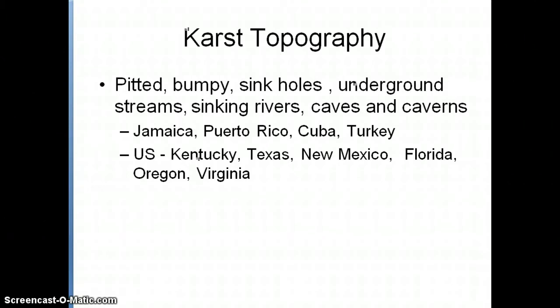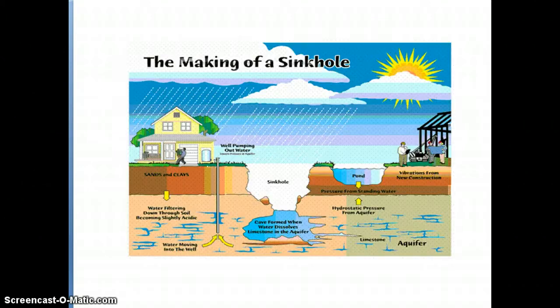Karst landscapes are very common in places like Jamaica, Puerto Rico, Turkey, and the United States — we even have a little karst landscape in southern Oregon. What that tells you about these places is that they have all been at some point ocean floors, which is pretty amazing when you think of all of these above-ground locations currently.